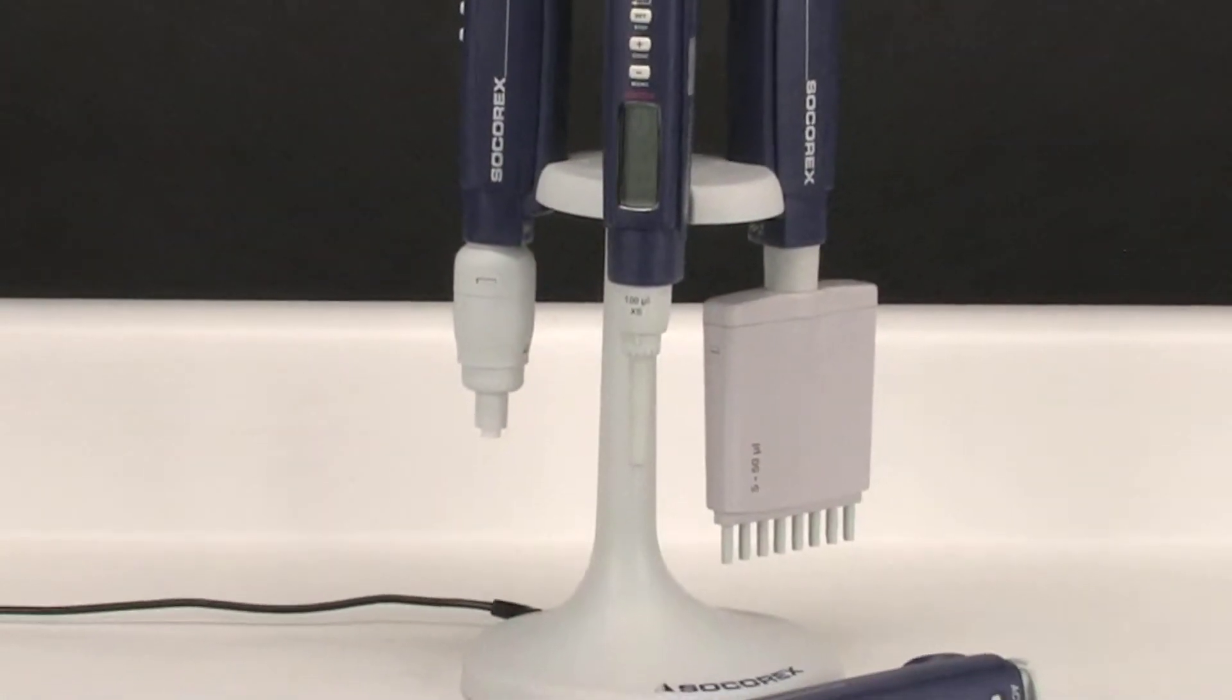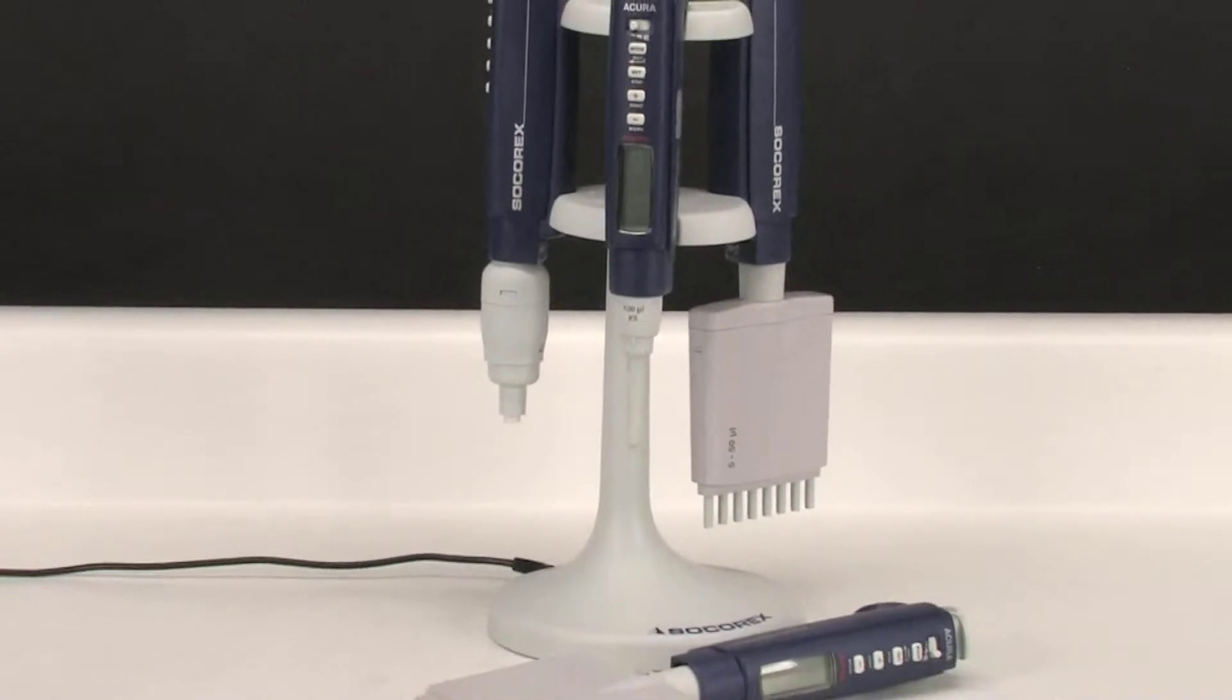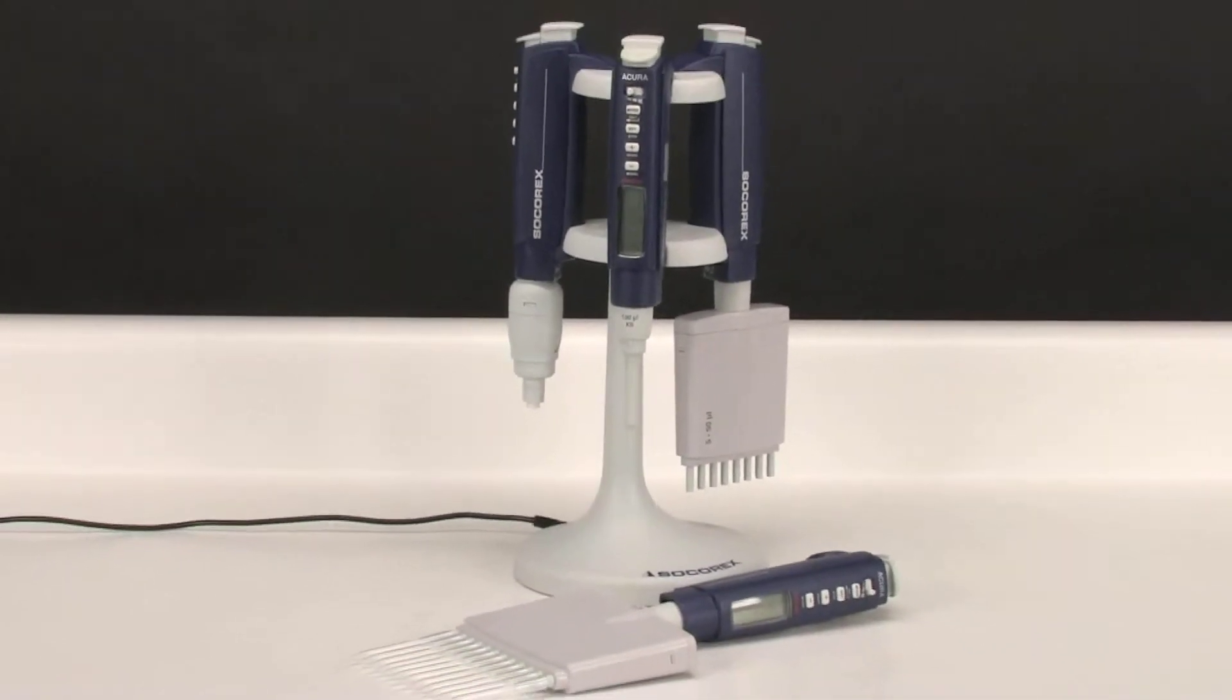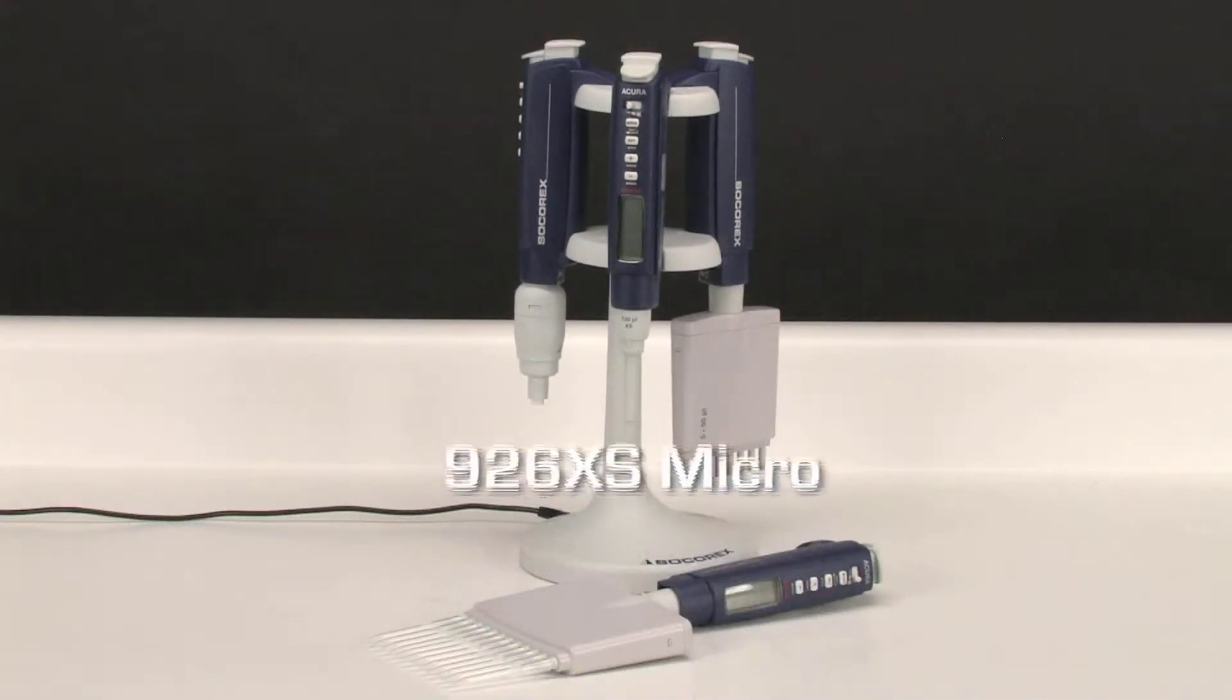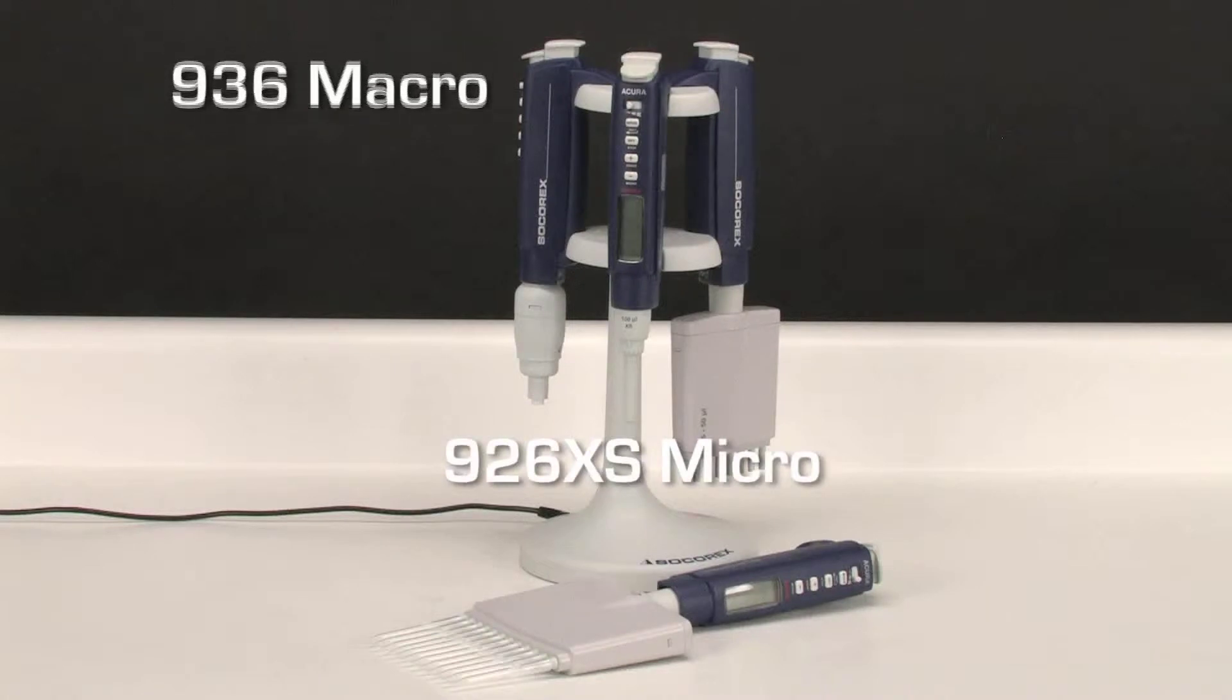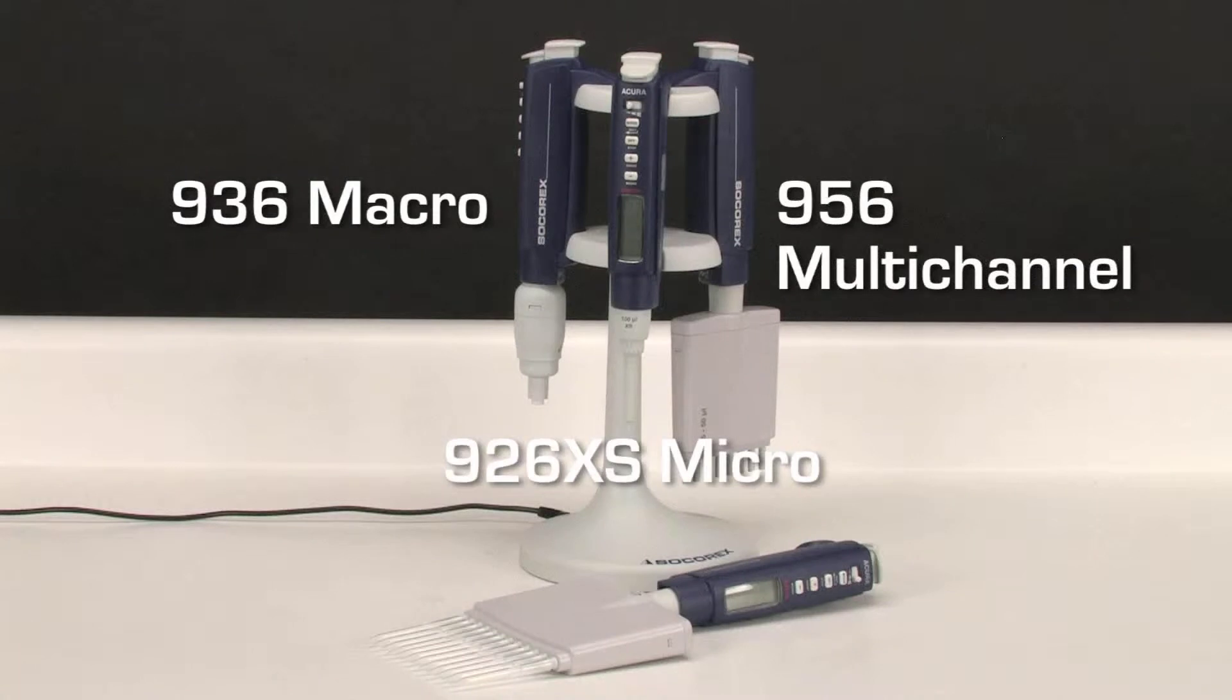The Electro series makes electronic pipetting in the lab more versatile, simpler, and safer than ever. The product line includes the 926XS micro, the 936 macro, and the 956 multi-channel models.